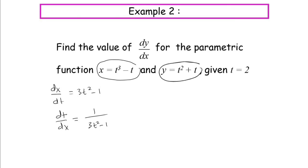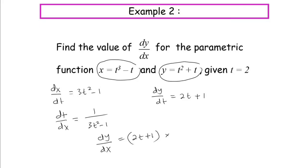Now let's find dy/dt. Our dy/dt is equal to 2t plus 1. And now let's find dy/dx. So dy/dx equals dy/dt which is 2t plus 1, multiplied with dt/dx which is 1 over 3t squared minus 1. The result is 2t plus 1 over 3t squared minus 1.